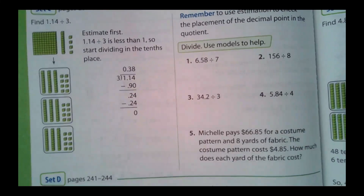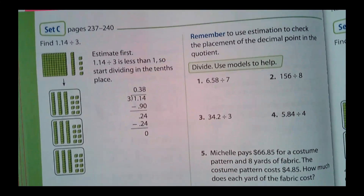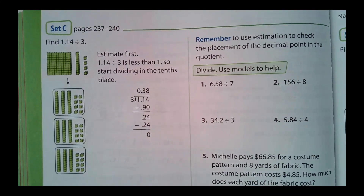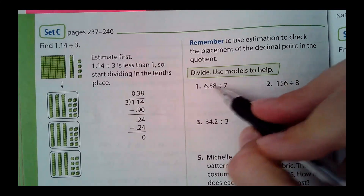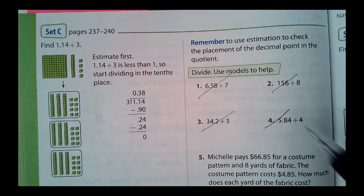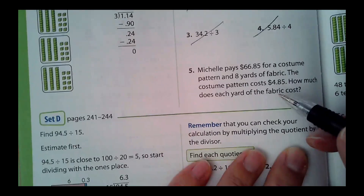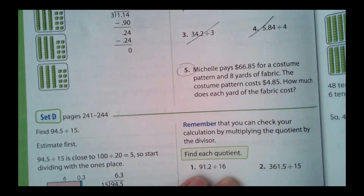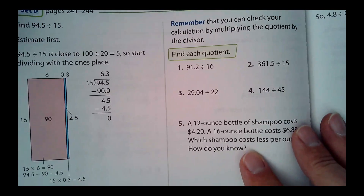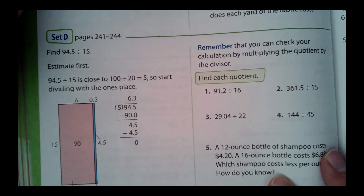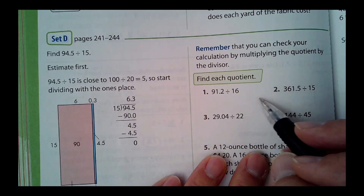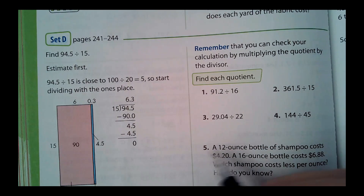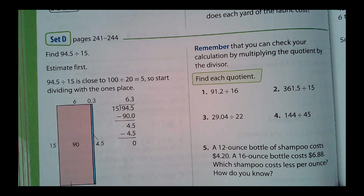At the top of page 256, we're at Set C — 'use estimation.' I'm not worried about problems one through four, but I do want you to do number five, and I'll let you figure that one out on your own. Same thing with Set D — actually, you can do all of those including number five.